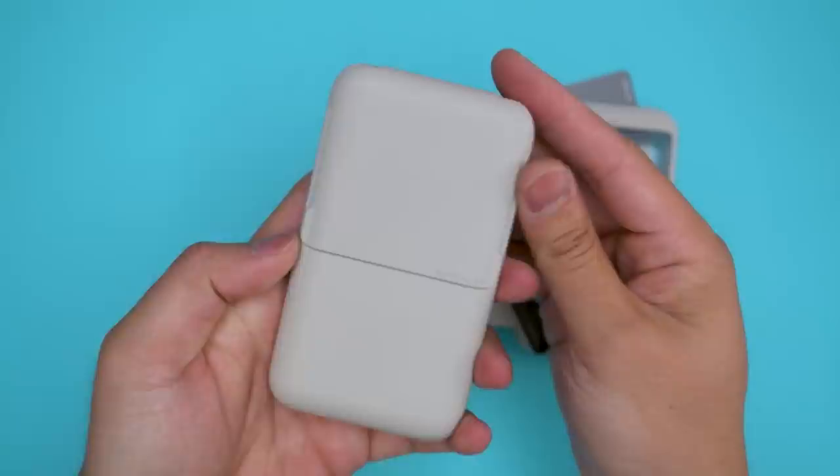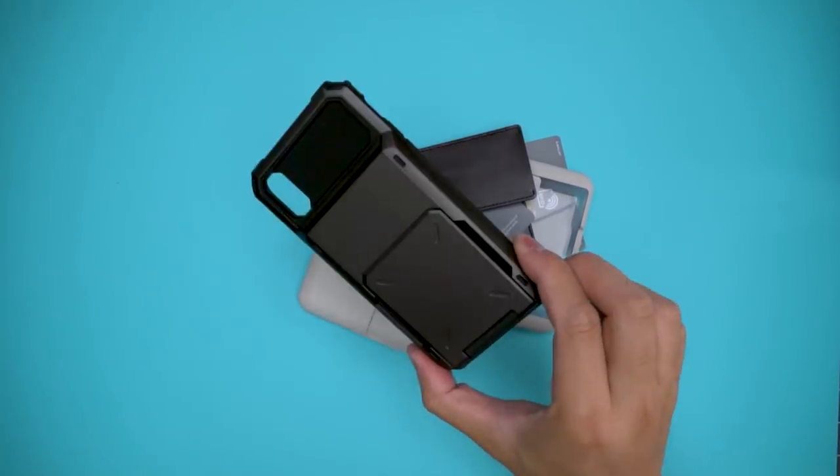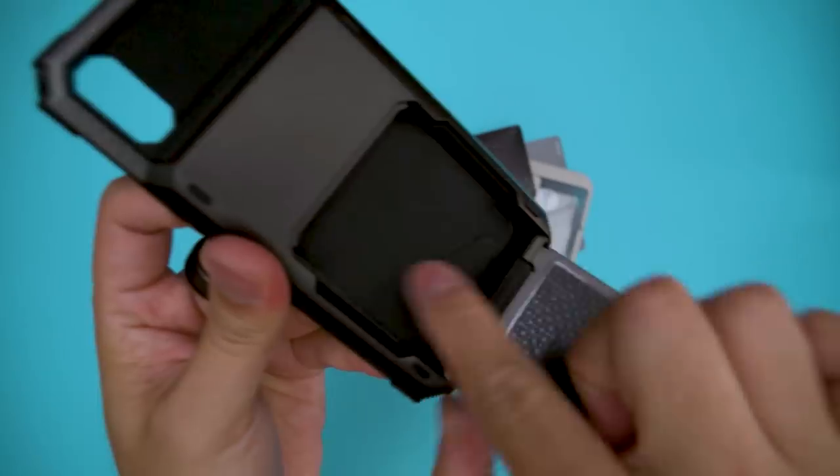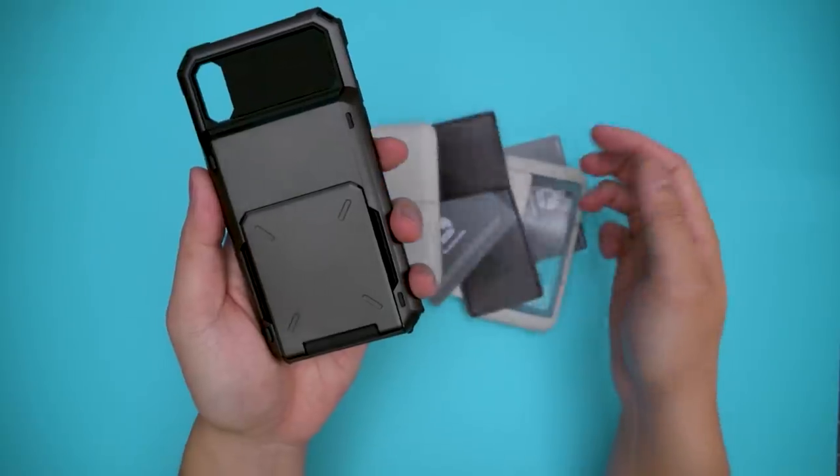There's also a flip door model, slightly more space, with additional functionality around back, but overall the same design otherwise. You may recognize it from one of my favorite cases VRS makes, the Damda Folder case I reviewed previously. It's a thick, tough case, but houses this huge storage area with a flip door. They basically just stripped the phone away and kept the wallet portion.